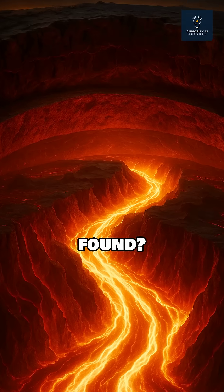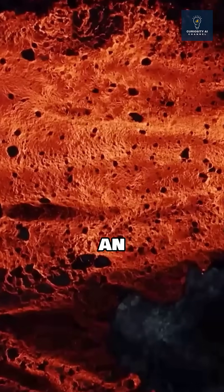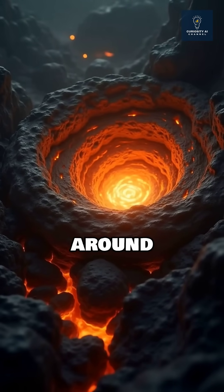What they found? Massive iron flows, strange magnetic anomalies, and even signs of an unknown liquid layer swirling around the core.